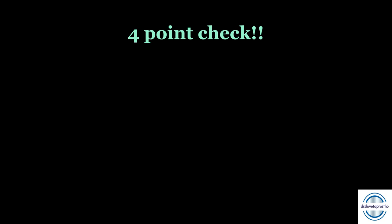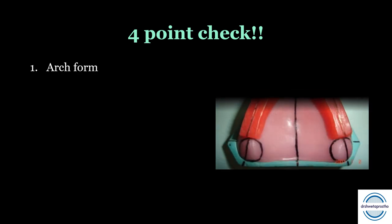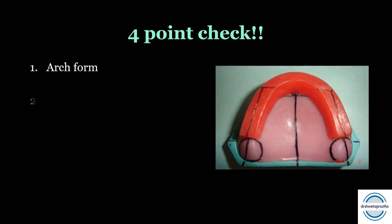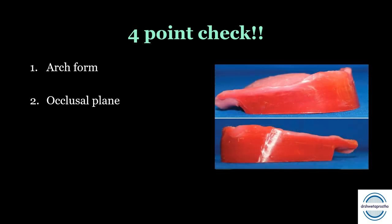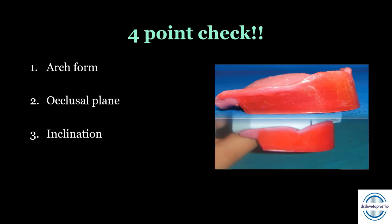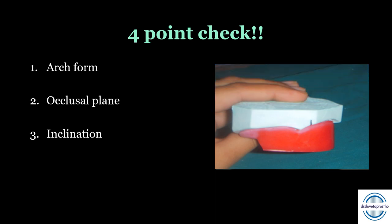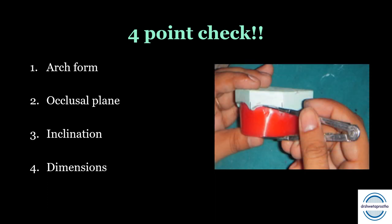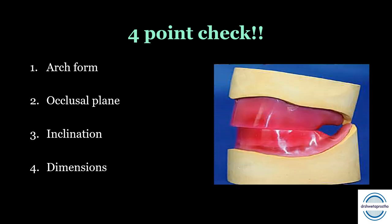Four things to check in your occlusal rims before taking them to your mentor for approval: first, the arch form — the contour of the rims should match the patient's arch form; second, the occlusal plane — it should be even, which can be checked by placing it on a glass slab; third, the inclination — upper rims inclined 10 to 15 degrees anteriorly, lower rims nearly vertical; fourth, the dimensions. Finishing and polishing is also very important for good grades.